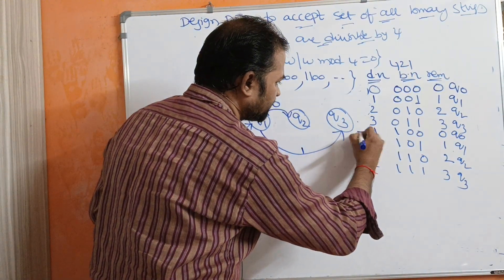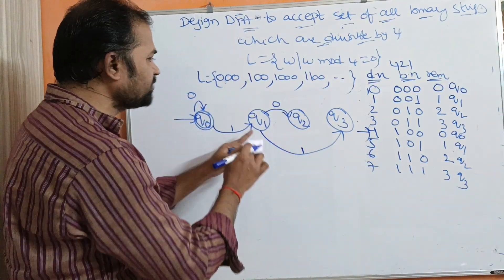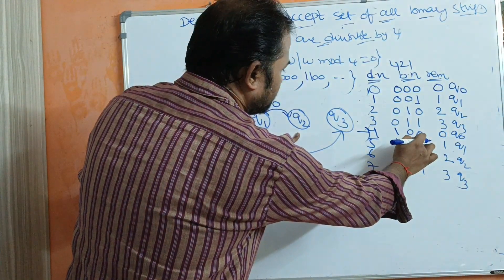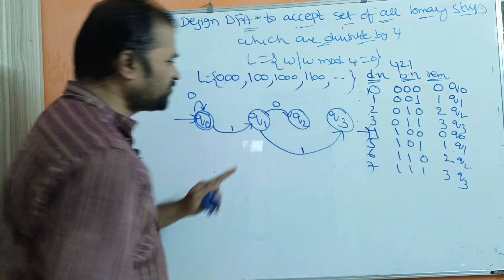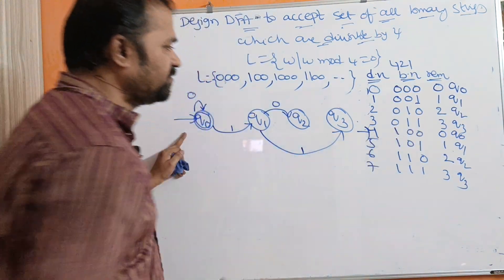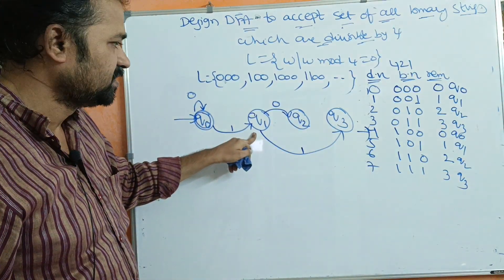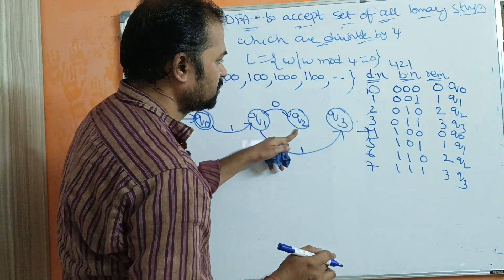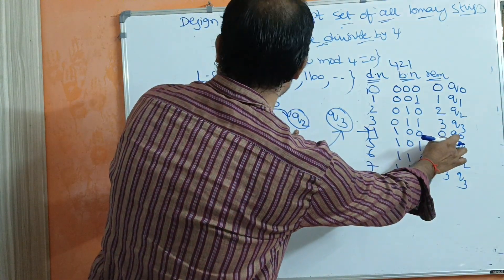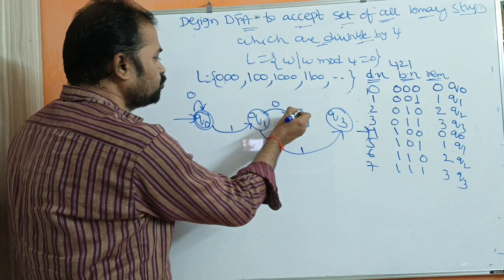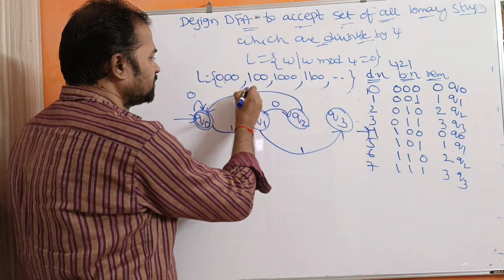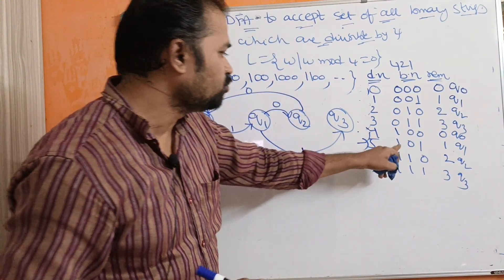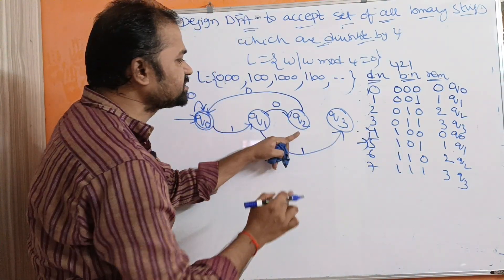For binary 100 (decimal 4): Q0 on 1 goes to Q1, Q1 on 0 goes to Q2, and Q2 on 0 goes to Q0. So Q2 on 0 means Q0 — this is an important transition. Let us verify: the number 100 is 4, which is divisible by 4, and we end at Q0 which is the final state.